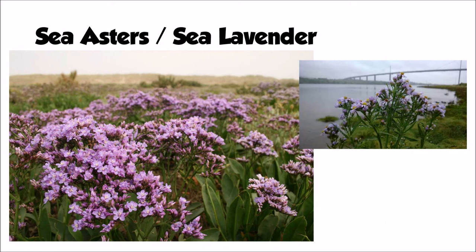Some photos here show the species that eventually replace cord grass, such as sea asters and sea lavender. These plants are very specially adapted to living in a salt marsh environment — they draw salt up through their roots and release it through their leaves via transpiration. This helps to reduce the levels of salt in the salt marsh, enabling other species to then colonise that environment.